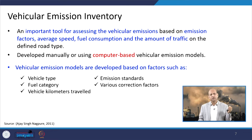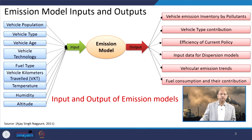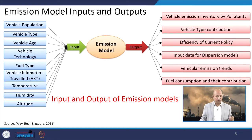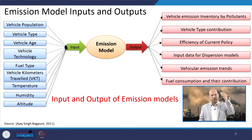Every person has a different kind of driving pattern — some apply more brakes, some use high speed — and that also influences emissions even if the vehicle is the same brand and year. So when we go for modelling the emission inventory, input data such as vehicle population, types of vehicle, age of the vehicle, vehicle technology, fuel type, vehicle kilometre travelled (VKT), temperature, humidity, and altitude — all these are the input values.